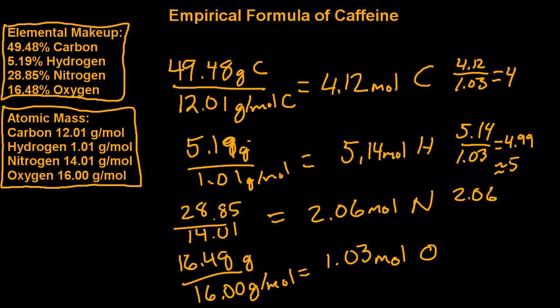For nitrogen, 2.06 divided by 1.03, that's going to be 2. And for oxygen, you divide 1.03 by itself, so that will be 1.